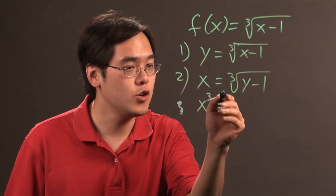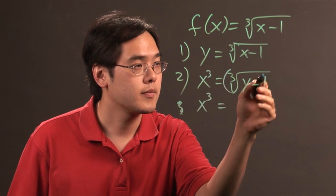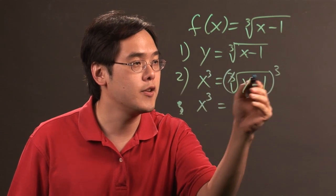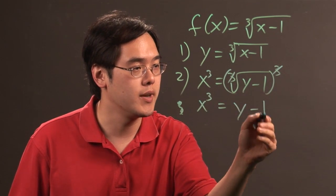x cubed equals... What happens here is that the cube root and the cube cancel, so you have y minus 1 left over.